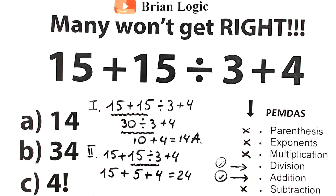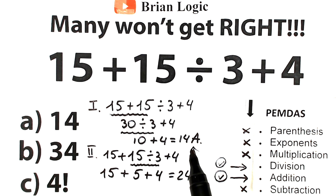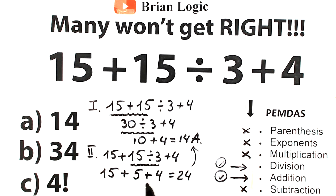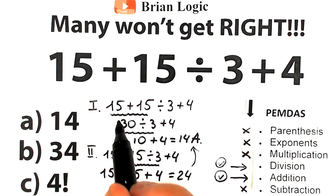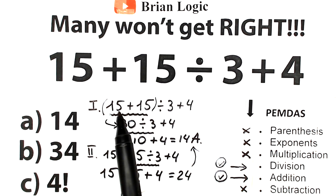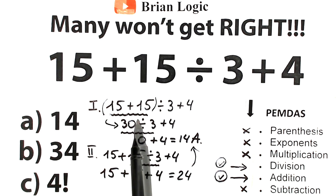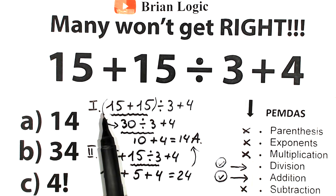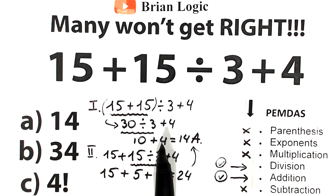But right now, as you can see, we don't have option 24 listed. A lot of students go back to answer 14, which is obviously wrong because that solves the question randomly — adding first and then dividing is a really bad mistake in math. Addition is always after division. Multiplication and division always come before addition and subtraction. Addition and subtraction is always the last group. Now, with parentheses — (15+15) ÷ 3 + 4 — 15 plus 15 is the first step giving 30, then 30 divided by 3 plus 4 equals 14. But we don't have parentheses, so forget option A — it's absolutely wrong.